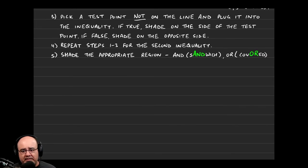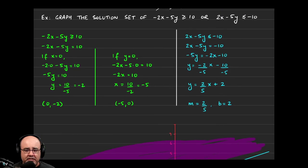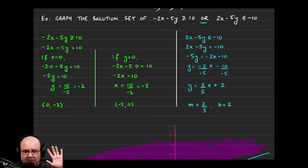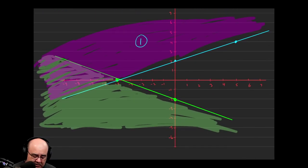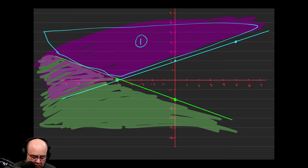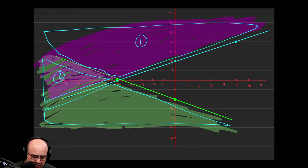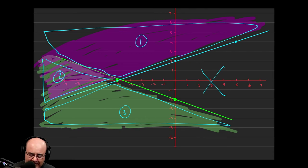We did that for the first inequality and the second inequality. The last thing we have to do is shade the appropriate region. If we have an AND compound inequality, we shade the sandwich — wherever the two regions overlap. With an OR compound inequality, anything that's covered is our final answer. In this problem we were given an OR, so the solution set includes the region below the green line, the small region between the lines, the region above the blue line — everything covered. The only region not included is where the origin is, since it gave us false for both inequalities.